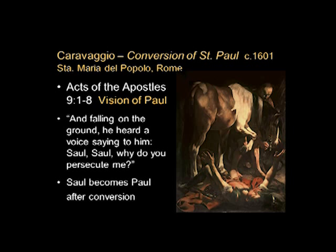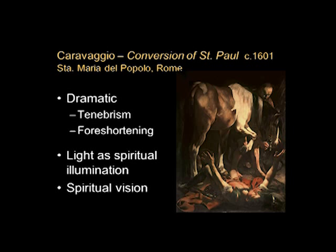The blinding light was literally blinding to Saul, although not to any of the people who were with him. So we see him on the ground — the tenebroso, the bright light, in this case from a spiritual source. Light here is truly shown as spiritual illumination as it shines down on the fallen Paul. He is dramatically foreshortened with his head coming right out into our space, which makes us feel he is very close to us, as if we may be one of the people accompanying him.